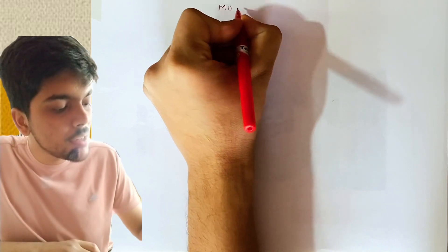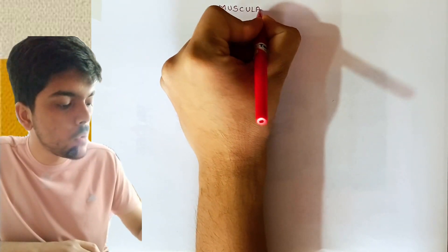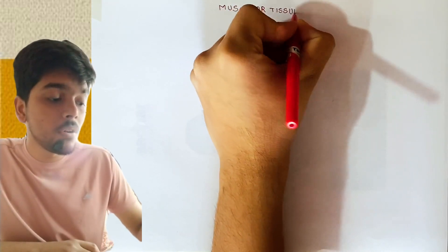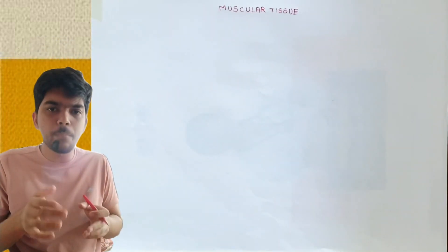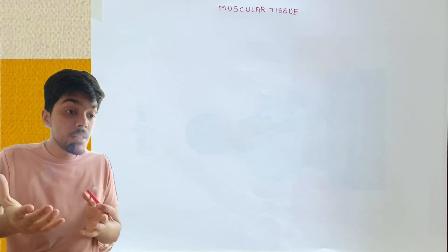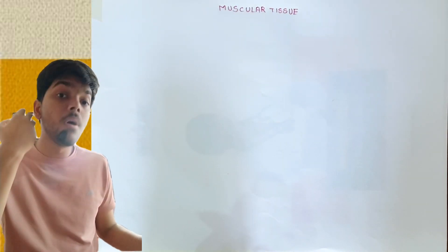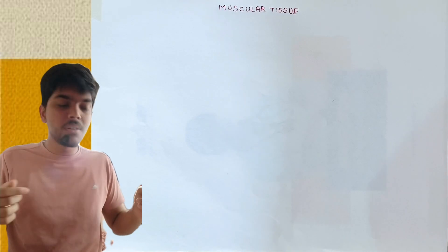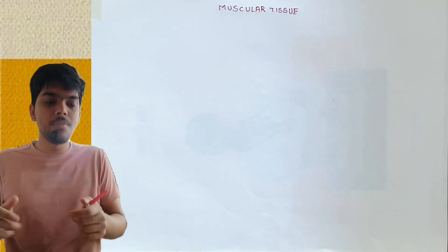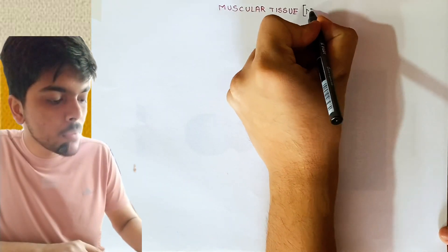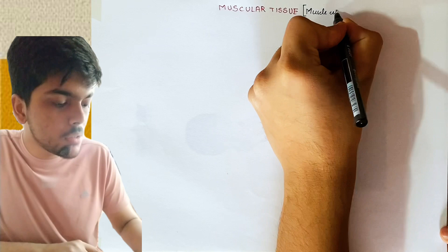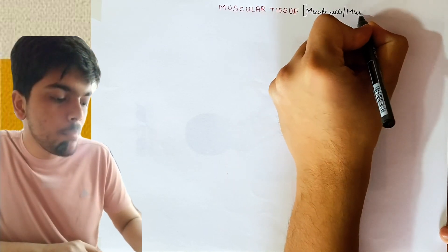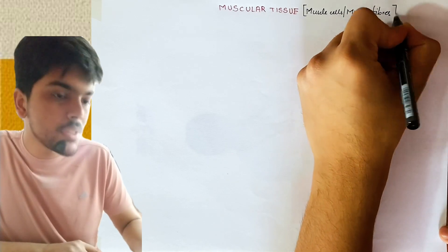In this video, we are going to deal with the third type of animal tissue, and that is muscular tissue. Muscular tissue is made up of muscles or muscle cells, and the cells of muscles are elongated and they look like fibers. So muscle cells are also called muscle fibers.